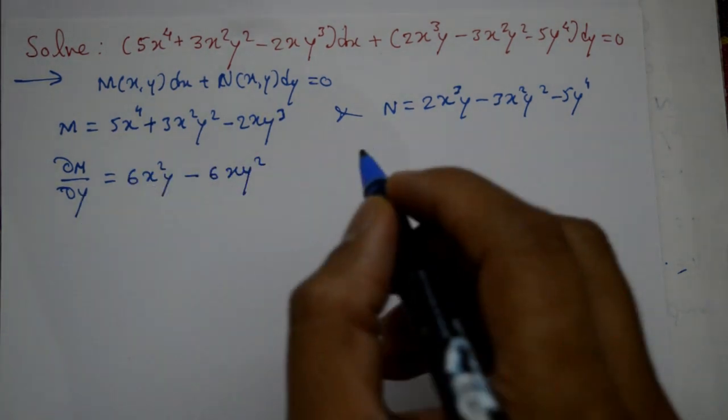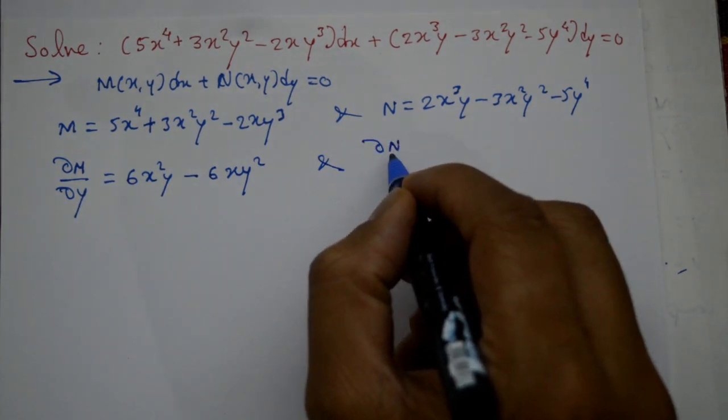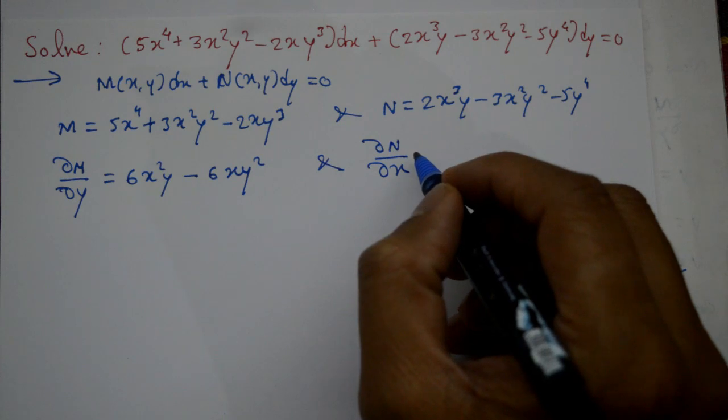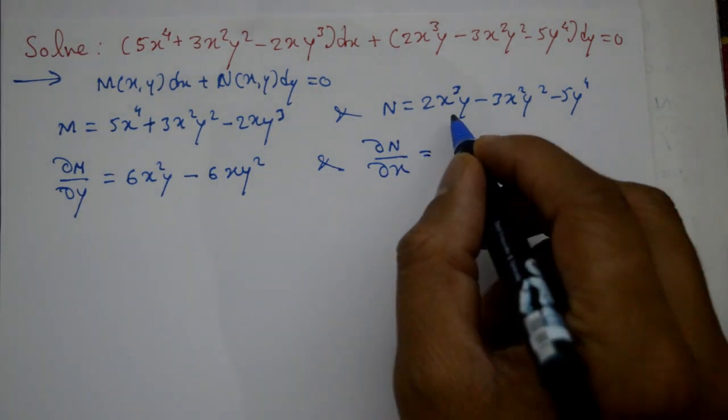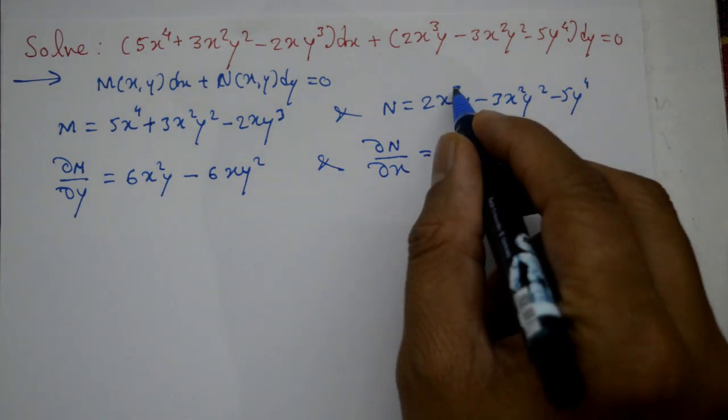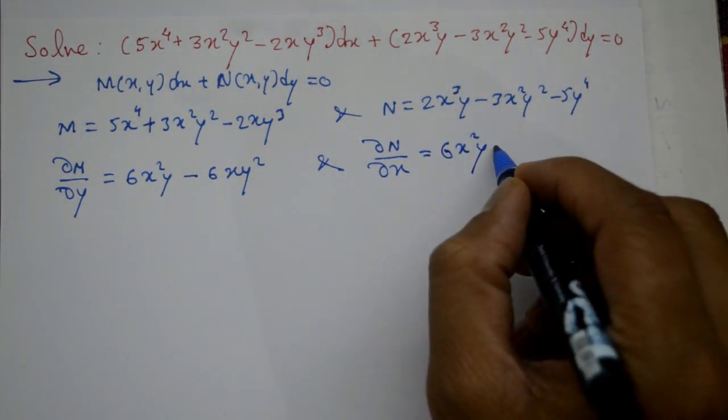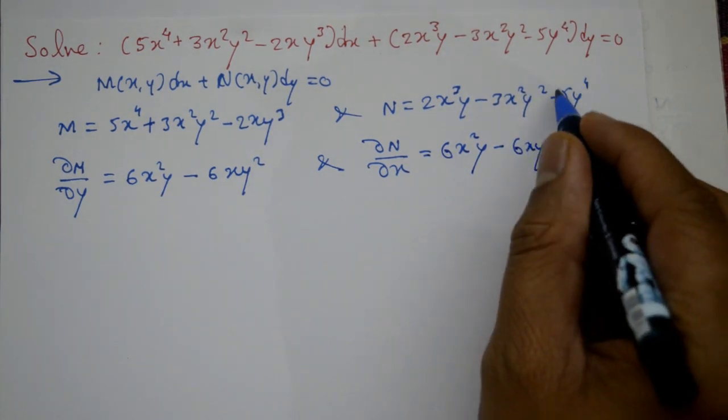Also, differentiate N with respect to x partially, treating y as a constant. This is equal to: differentiate with respect to x to get 6x^2y minus 6xy^2, and the constant is zero.